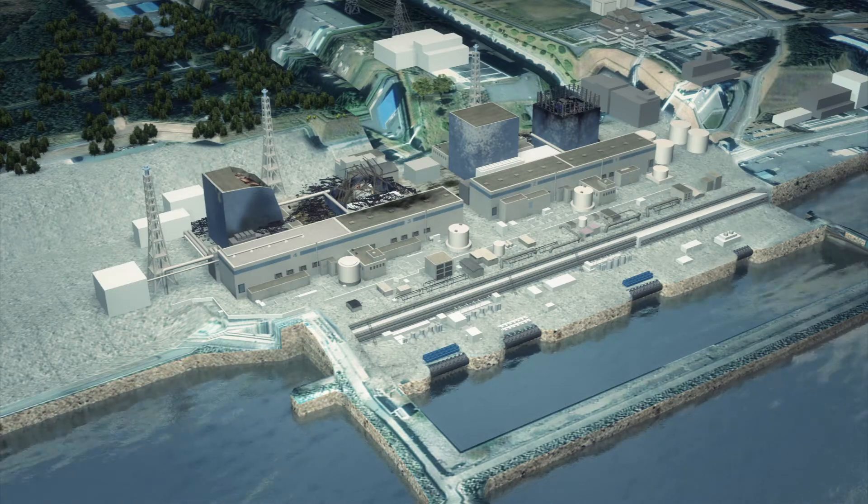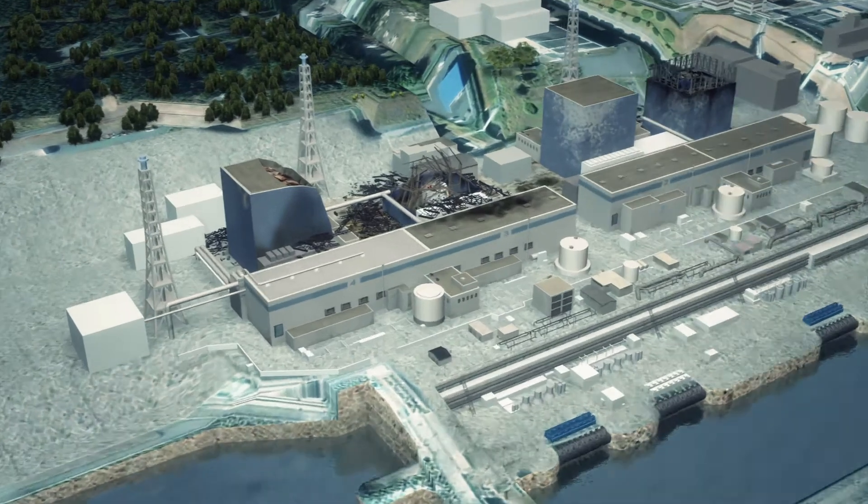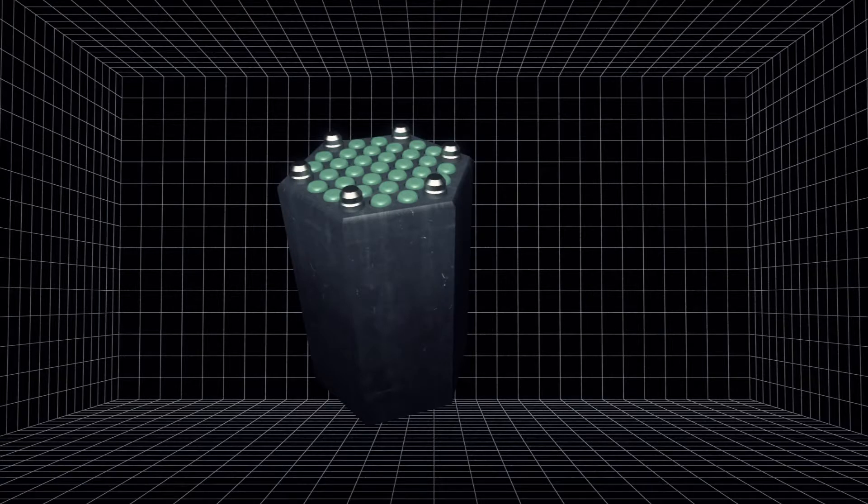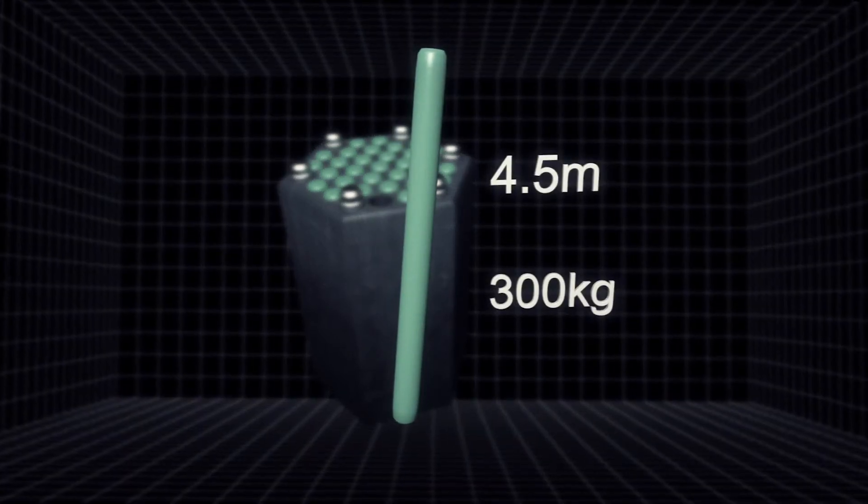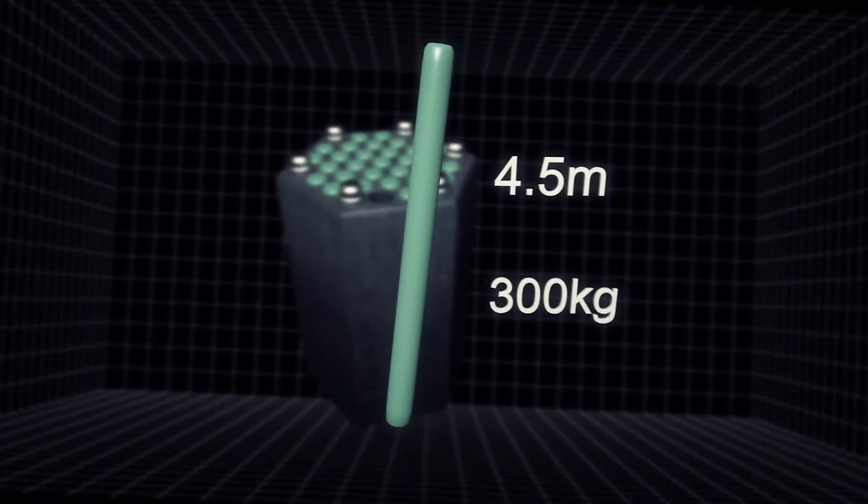Reactor 4 sustained the most severe damage and can no longer safely keep fuel rods. Each rod is 4.5 meters long and weighs 300 kilograms.